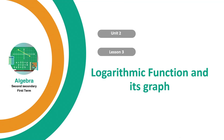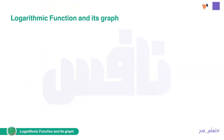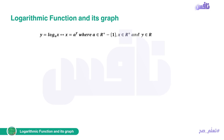Hello, dear students, and welcome back to our Branch Algebra, Unit 2, Lesson 3: Logarithmic Functions and its Graph. The logarithmic function is defined as y equals log base a of x, where x equals a to the power y, with a belonging to the positive reals except 1, x belonging to the positive reals, and y belonging to the reals. These are the conditions for us to talk about logarithms.